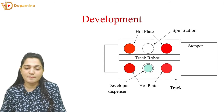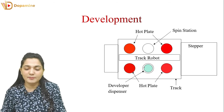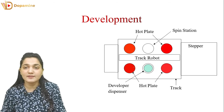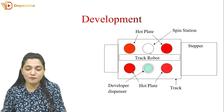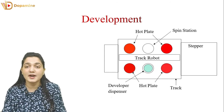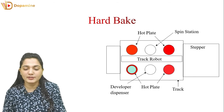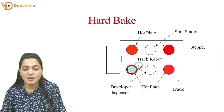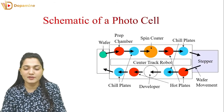After post-exposure bake, the development process happens again with the help of a rotating spindle. A developer dispenser nozzle dispenses the developer solution on the wafer, which removes the softened photoresist. The developer dissolves the exposed photoresist, forming a pattern of the hardened photoresist only. After that, a hot plate is used for hard bake, and once hard bake is complete, the wafer is moved out.